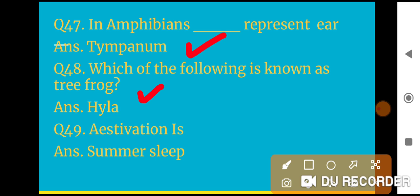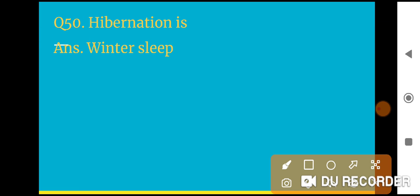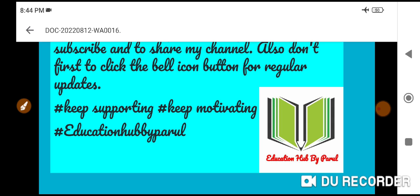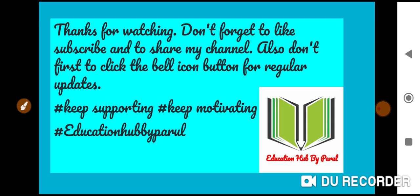Question 46: Which of the following is known as flying fish? Exocoetus. Question 47: In amphibians, what represents ears? Tympanum. Question 48: Which of the following is known as tree frog? Hyla. Question 49: Estivation is summer sleep. Question 50: Hibernation is winter sleep.